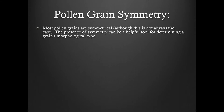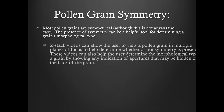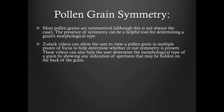Most pollen grains are symmetrical, although this is not always the case. The presence of symmetry can be a helpful tool for determining a grain's morphological type. ZStack videos can allow the user to view a pollen grain in multiple planes of focus to help determine whether or not symmetry is present. These videos can also help the user determine the morphological type of a grain by showing any indication of apertures that may be hidden on the back of the grain.